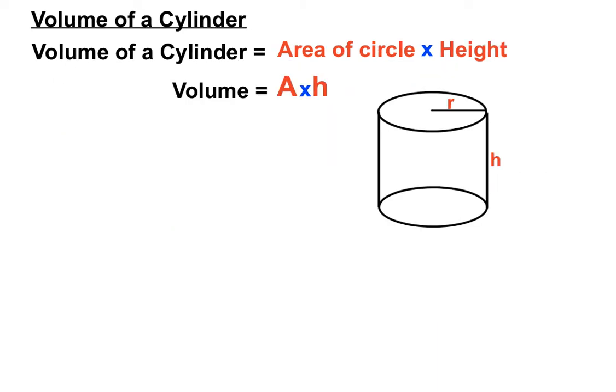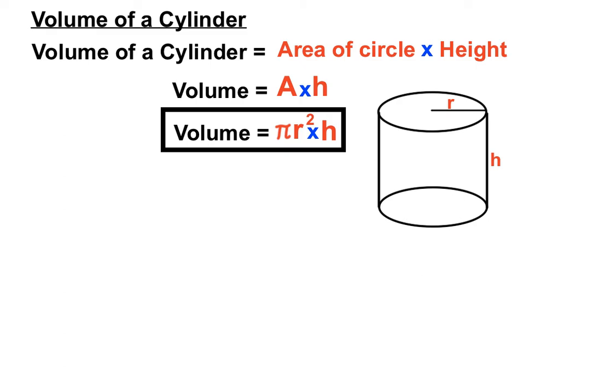Volume equals A times H, and in this case, the A represented a circle formula of pi R squared, so it'll be volume equals pi R squared H which is the specific volume formula for a cylinder. And if the cylinder, we saw in that second example, if the cylinder has a diameter, we've got to divide by two first to get a radius to use in our formula.